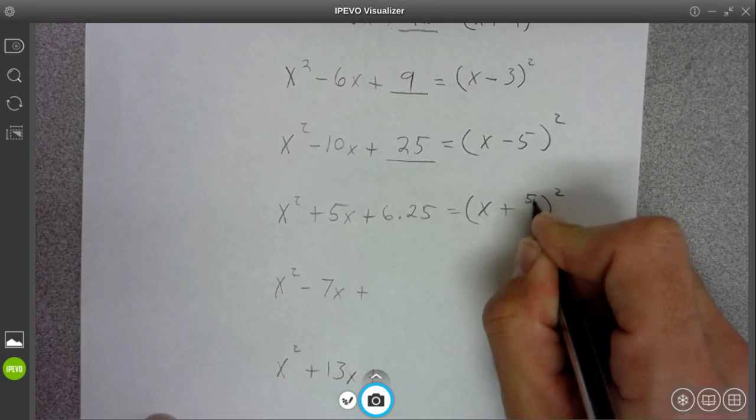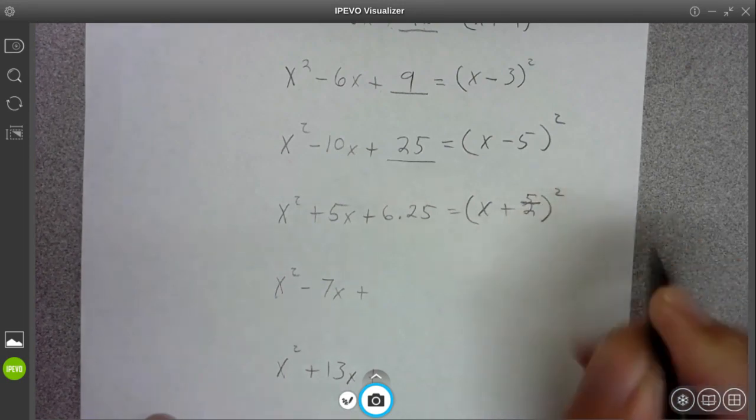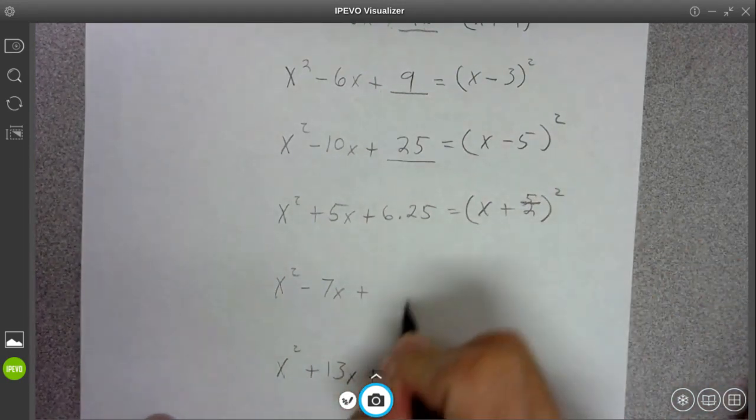So you could put 5 over 2, or you could put 2.5. Probably 2.5 would have been better.